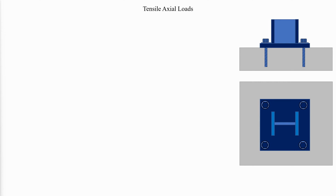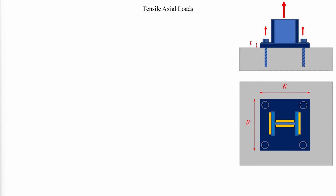The design of anchor rods for tension consists of four steps: determine the maximum net uplift for the column; select the anchor rod material and the number and size of anchor rods required to resist uplift; determine the appropriate base plate size, thickness, and welding to transfer the uplift forces; and determine the method for developing the strength of the anchor rod in the concrete.